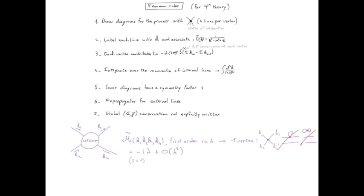We can use the same rules to get the second order in lambda. In this case we will have two vertices, and therefore there will be internal lines to sum over and also symmetry factors associated to them.